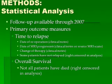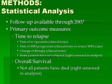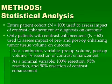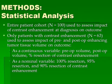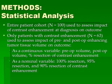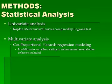We had follow-up available through 2007 — a six-year follow-up — and our primary outcome measures were time to relapse and overall survival; patients who had not died were right-censored. The entire cohort was used to assess the impact of contrast enhancement at diagnosis on outcome, and the 63% of patients who had contrast enhancement were used to assess the impact of pre- and postoperative enhancing volumes on outcome. Enhancing tumor tissue volume was assessed both as a continuous variable and as a nominal variable, grouping patients into those with 100% resection, 95–99% resection, and 90–99% resection. Univariate and multivariate analyses were performed in the usual fashion.